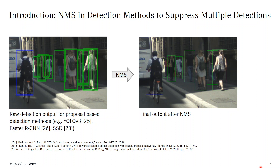So how do we end up with missing detections in groups? When we look at the raw detection output of common proposal-based detection methods like YOLO, SSD, or Faster RCNN, we see that there are multiple detections per object. This happens because we usually have more proposals than objects, and each proposed box is classified independently. Therefore, these methods depend on a so-called non-maximum suppression to end up with exactly one detection per object. Usually, a surprisingly simple greedy implementation is used that only relies on a single intersection-over-union threshold for suppression. No appearance information is used, so this algorithm cannot really be aware of the number of objects present.